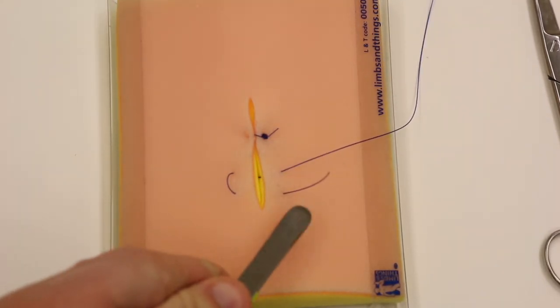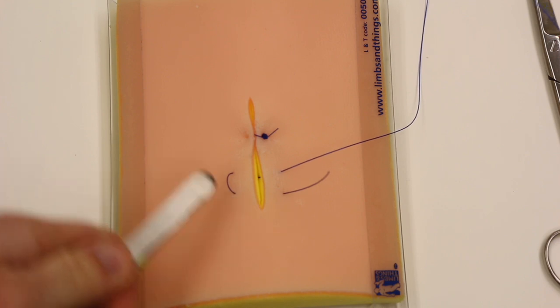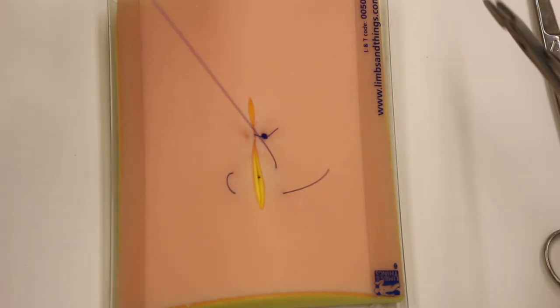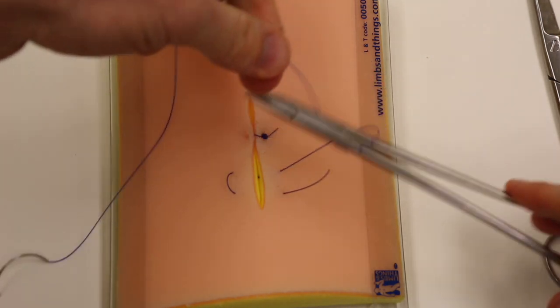So hopefully you'll see that we go in here, out here, in here, out here, making a little box. And it's just the same instrument ties before. So two wraps.